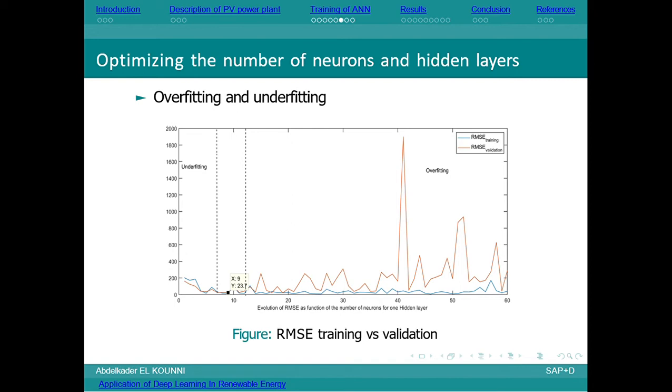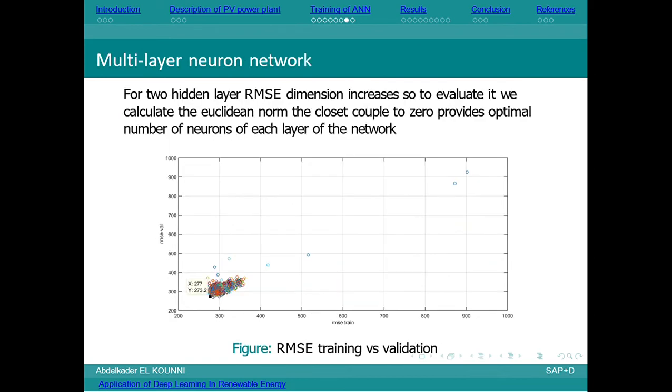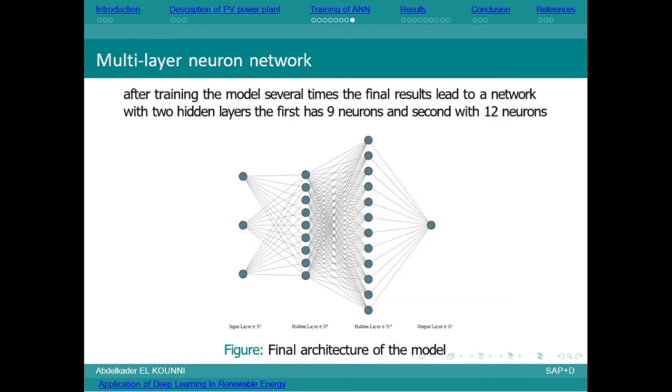This is one of the experiments we did with a single layer to determine the optimal number of neurons. For two hidden layers, we had to compute the RMSE values and evaluate for different combinations. After doing many tests, we found that the optimal configuration is with 9 neurons in the first layer and 12 neurons in the second layer.